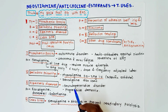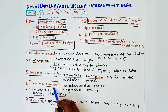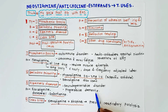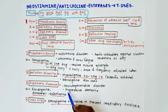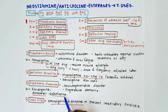Next is Alzheimer's disease, which is a neurodegenerative disorder with progressive dementia — that is, progressive loss of ability to remember things. In this case, rivastigmine, donepezil, and galantamine are the anticholinesterases which are used.